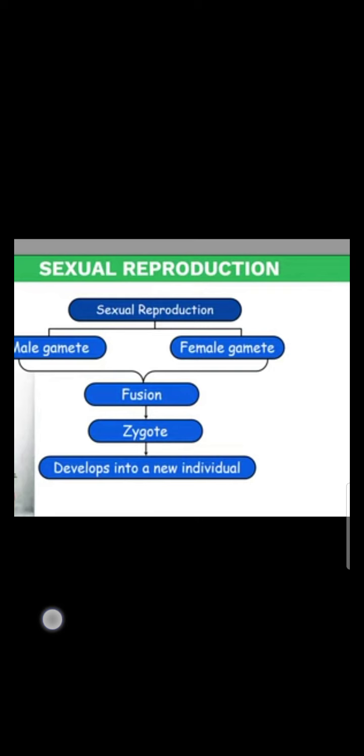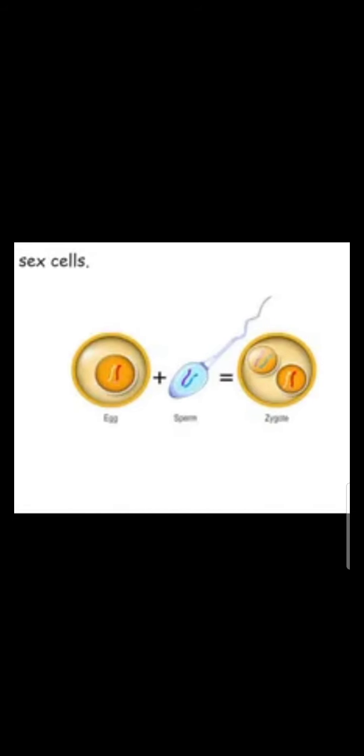By the division of the zygote, a new individual develops. Sexual reproduction involves two sex cells — the gametes of male and female. From the female gamete, an egg is produced, and from the male gamete, a sperm is produced. In most cases, these two gametes are produced by two different individuals. However, in some animals like the earthworm, the same parent has both gametes. If an animal has both male and female gametes, it is known as a hermaphrodite.